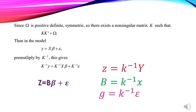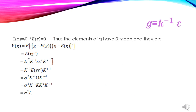We substitute: let Z = K⁻¹Y, B = K⁻¹X, and g = K⁻¹ε. Then the expectation of g equals K⁻¹ times expectation of epsilon. Since expectation of epsilon is zero, the expectation of g equals zero. The elements of g have zero mean.